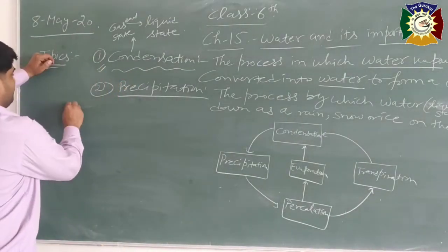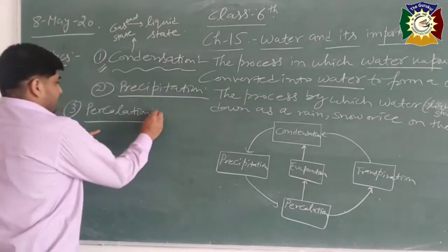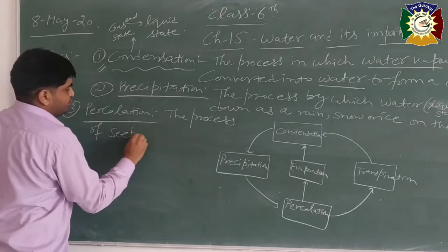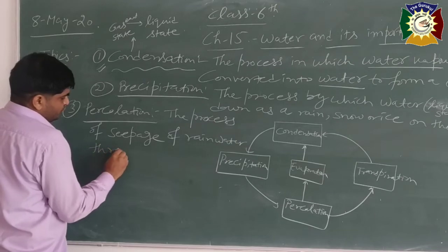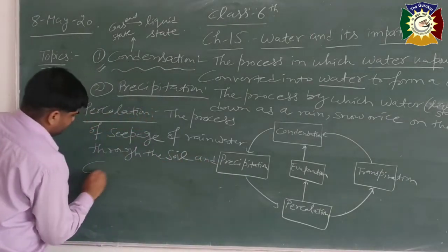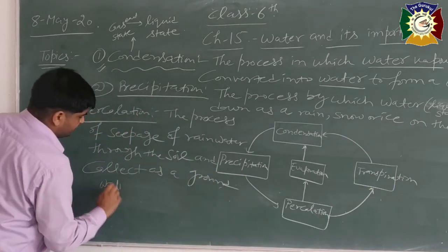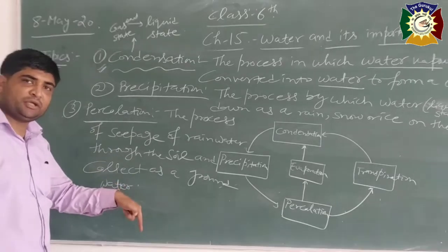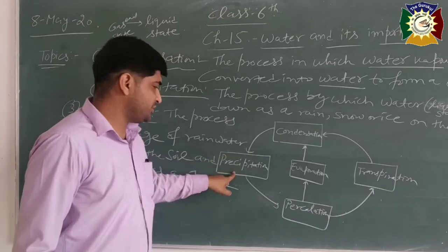The next process is percolation — the process of seepage of rainwater through the soil, where it is collected as groundwater. When water seeps down through the soil and is collected as groundwater, this process is called percolation.